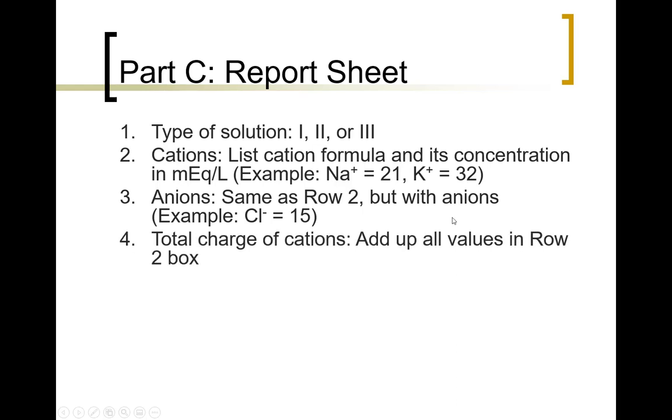Total charge of the cations, you would add up all the values that are in the row two box. If there's only one value, it would be exactly the same thing as the row two box. So for example, in row two, let's say the only thing it says is sodium is 21. Then in this box, you would write 21.